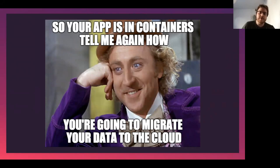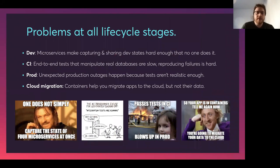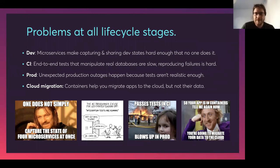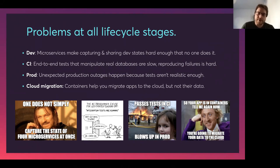If you take a step back and look at the common theme, there are problems at all stages of the software lifecycle. In dev, microservices make capturing and sharing dev states hard. In CI, end-to-end tests that manipulate real databases are slow and flaky — and the more realistic they are, the flakier they are, and when they're flaky it's hard to reproduce the flakes. In production, unexpected outages happen because tests aren't realistic enough. And containers help you get your apps to the cloud, but not their data. Data management in cloud native is still an open space.